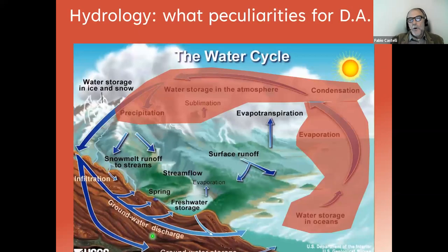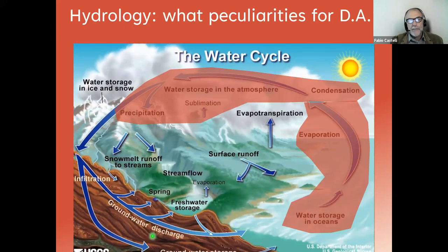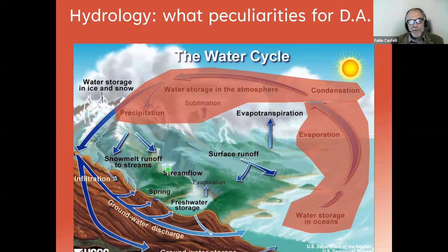As you know, hydrology is a science that deals with the water cycle. The water cycle on the planet is a very complex issue. It includes many different problems above the surface, on the surface, and below the surface.